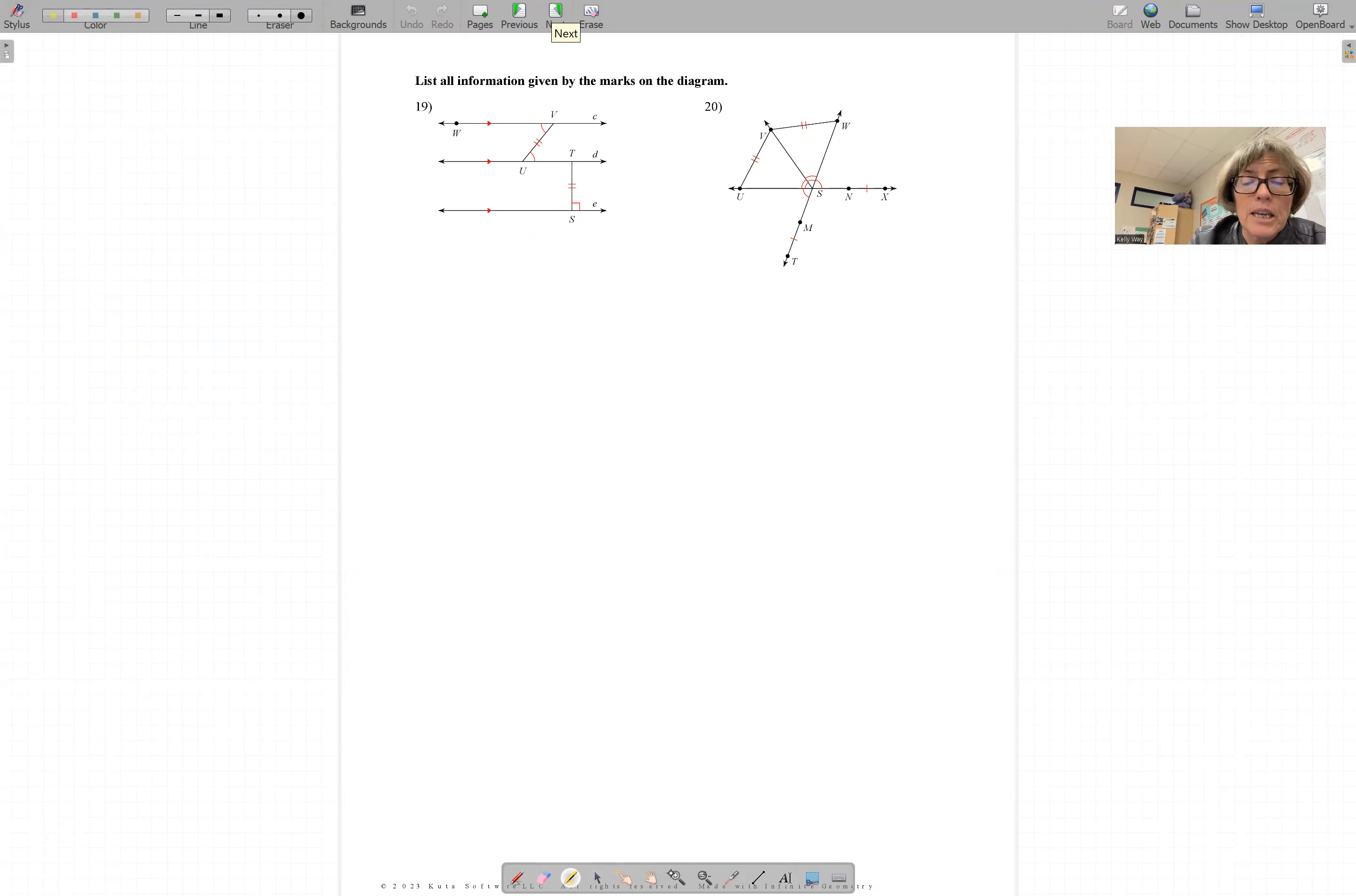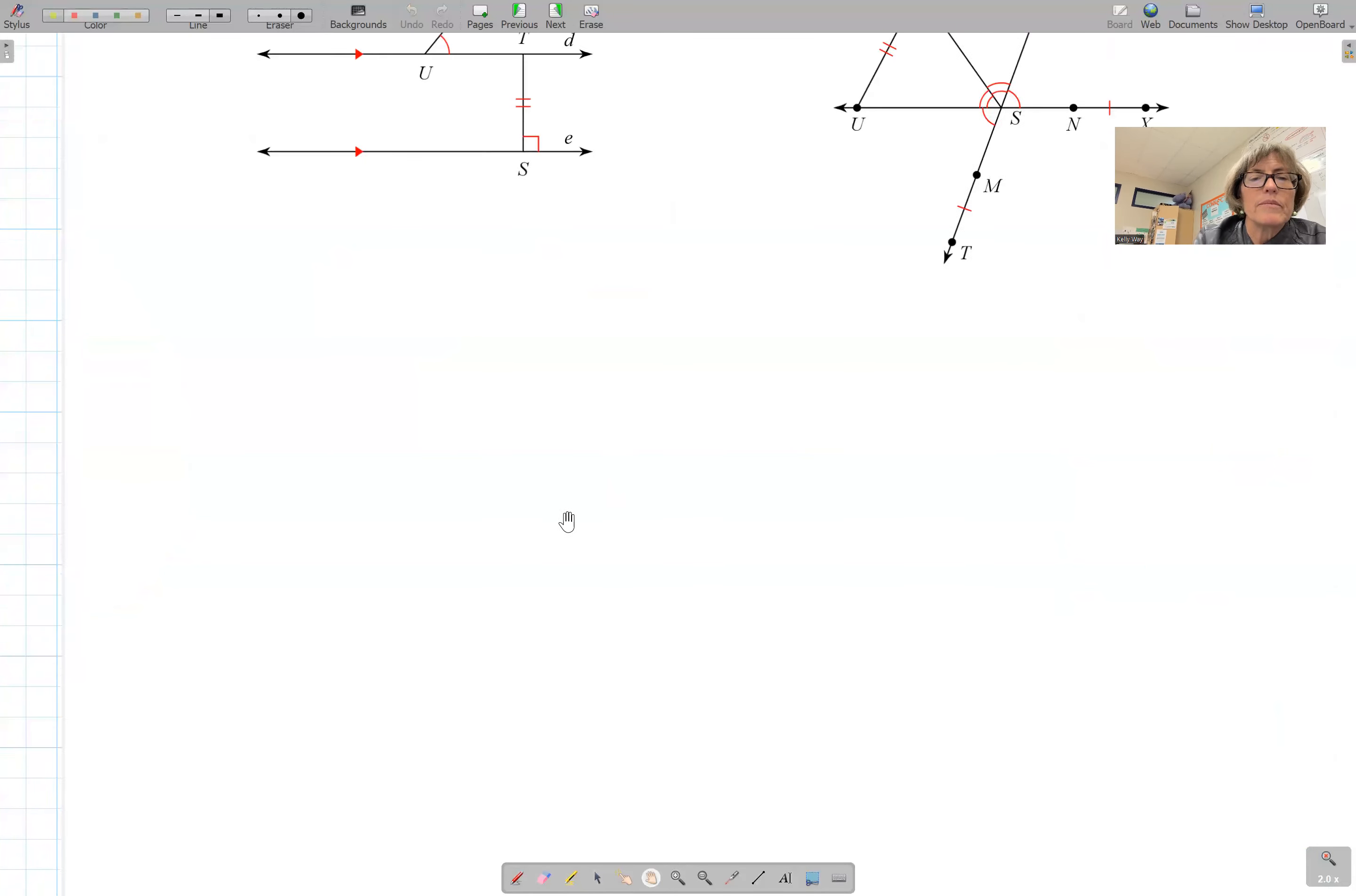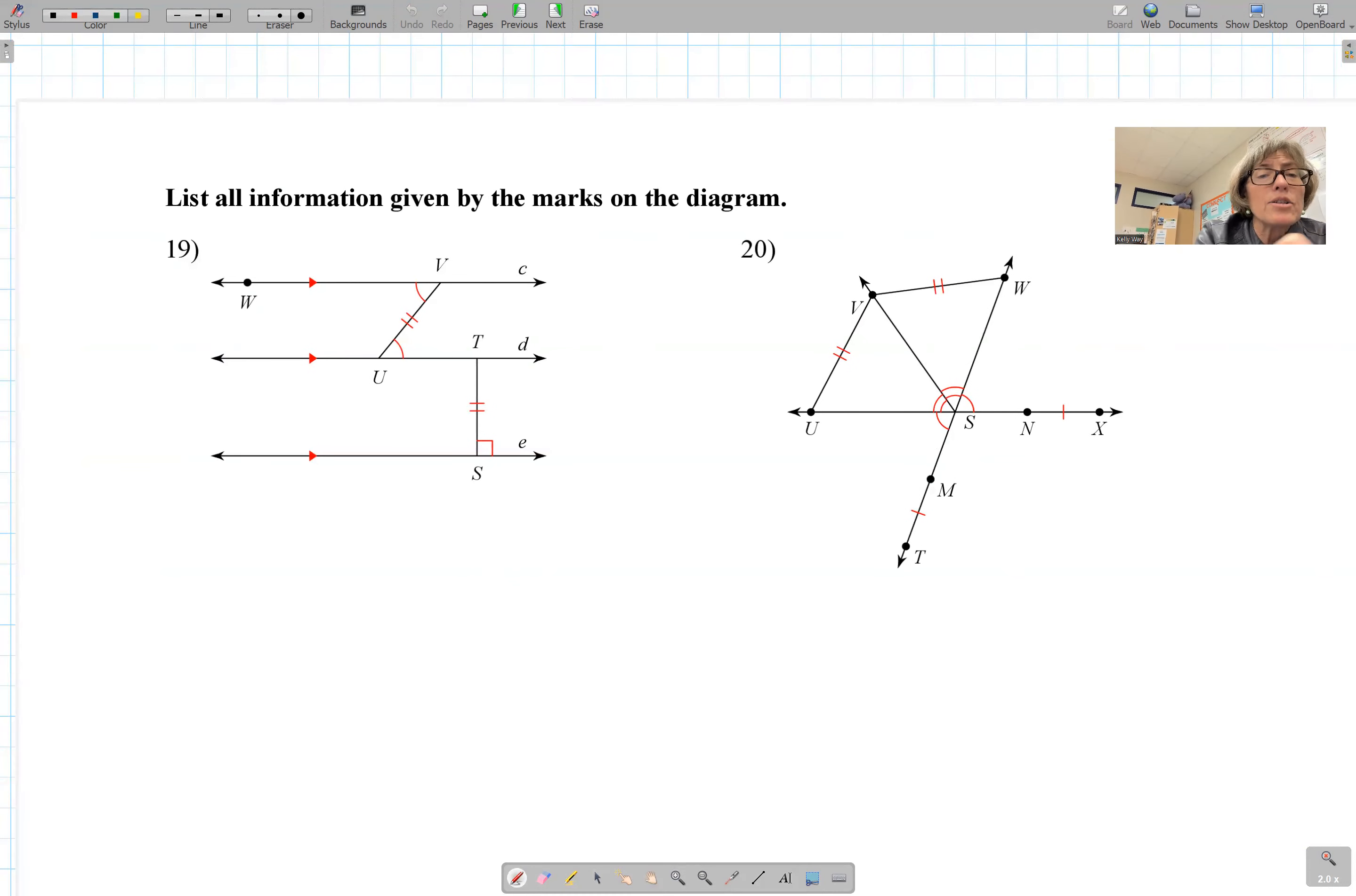Taking a look at 19. It says list all the information given by the marks. So you're not making assumptions about what's true here or even deductions. You are writing down exactly what is true. So I'm going to go one by one here. I'm going to color code it. We know these angles are marked congruent. So I would write it like this. Angle WVU is congruent to the angle VUT.